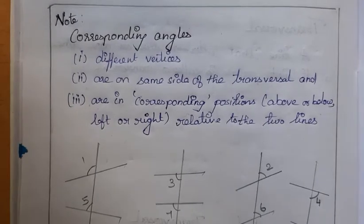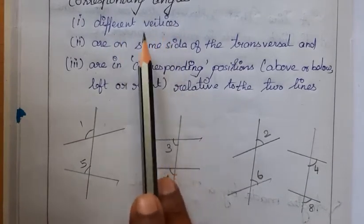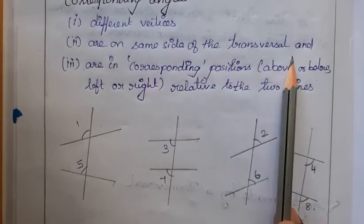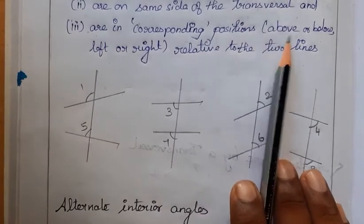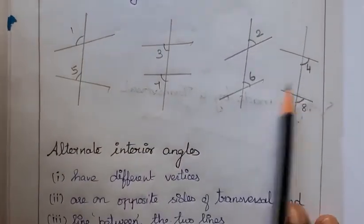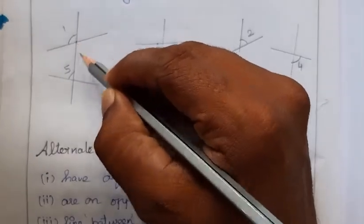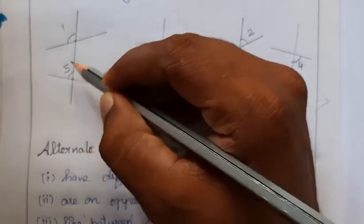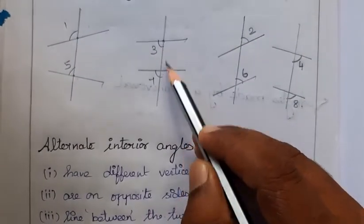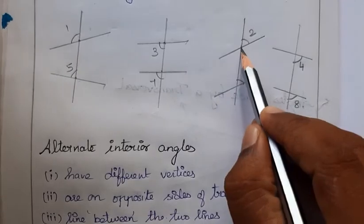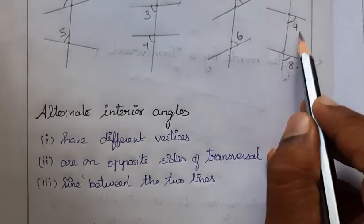Note that corresponding angles have different vertices and are on the same side of the transversal — whether left, right, above, or below relative to the two lines. For example, 1 and 3 are corresponding: different vertices, same side above-left. Similarly, different vertices below-left, above-right, and below-right for the other pairs.